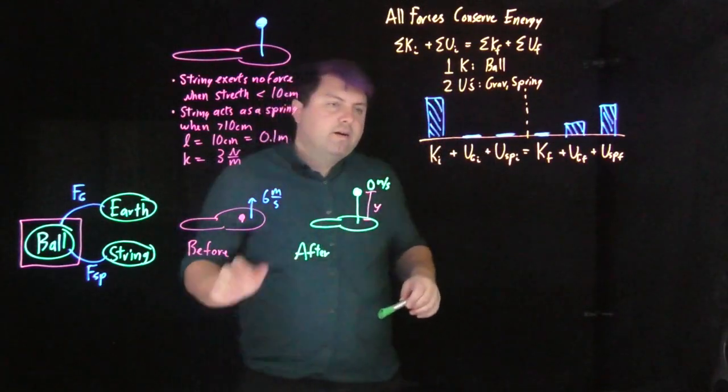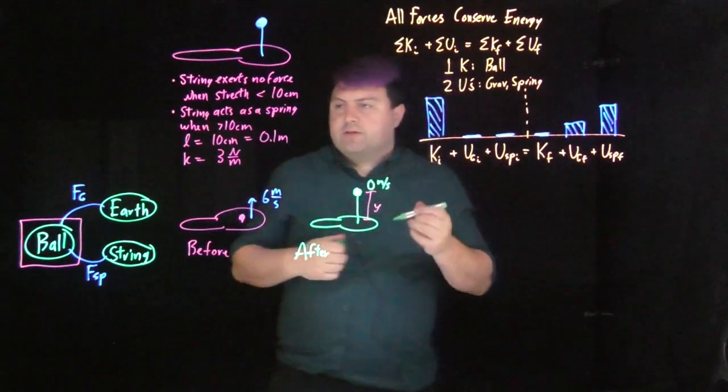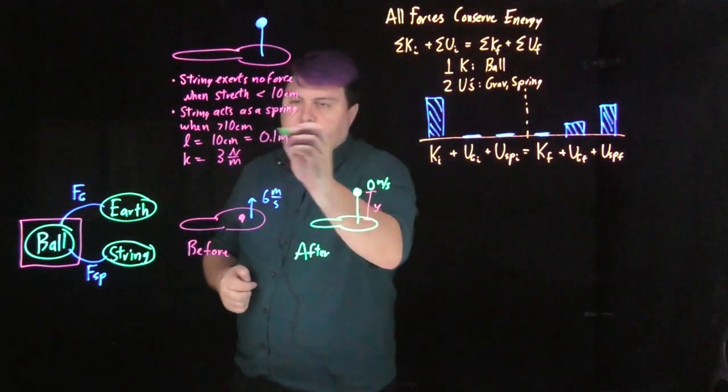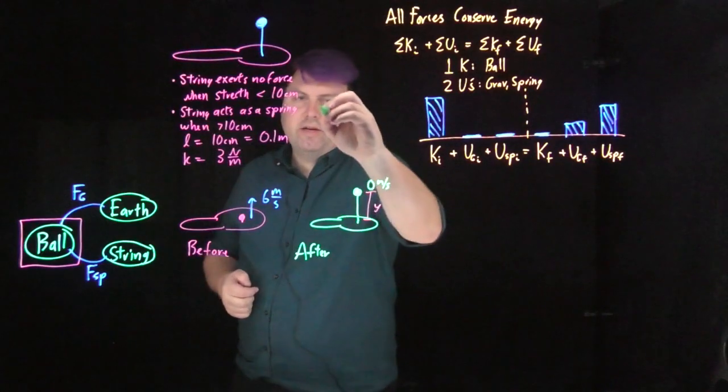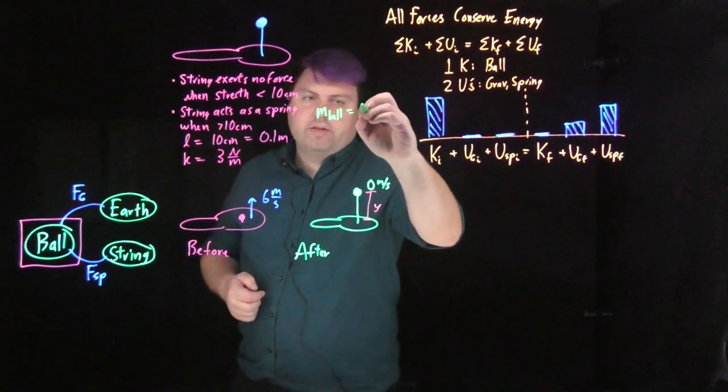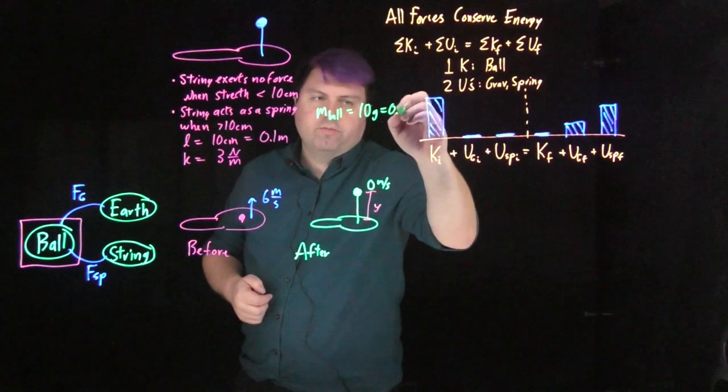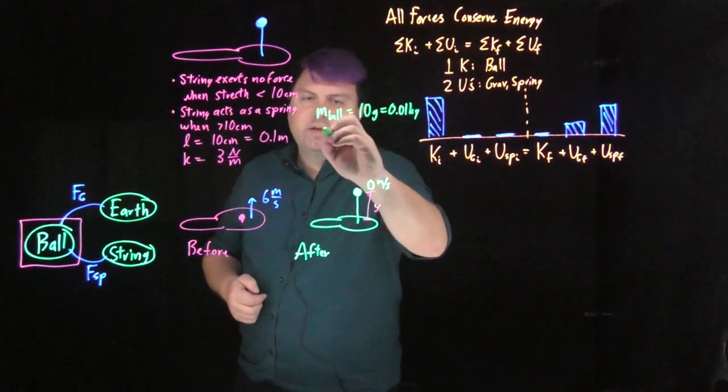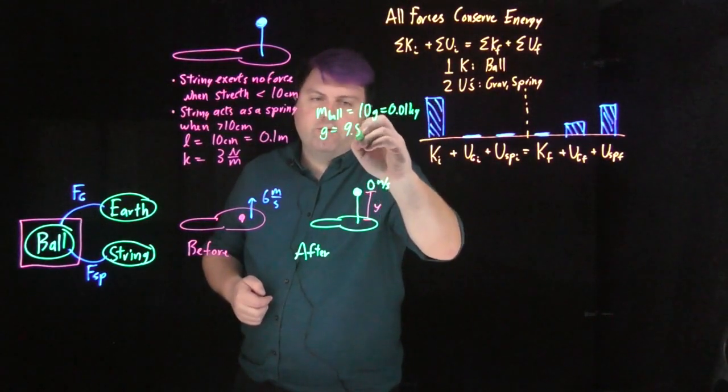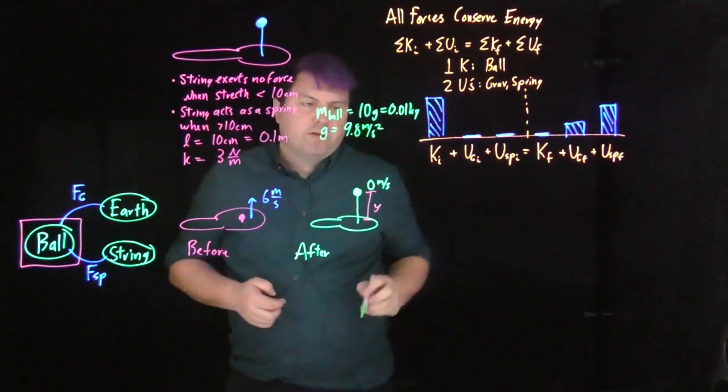Now we can write out our knowns. This k is 3 meters per second. Our mass of our ball, we're going to say is 10 grams, or 0.01 kilograms. And of course, our gravity is 9.8 meters per second squared.